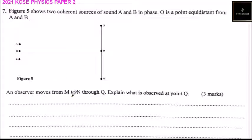Then, an observer moves from M to N through Q. So, an observer moves from M through Q to N. Explain what is observed at point Q. So, this is the point Q. You are supposed to explain what is observed.